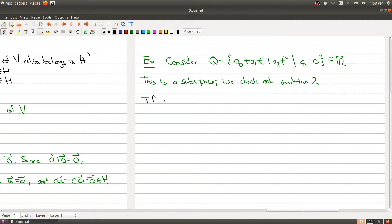So we have that if Pt and Qt are in Q, Pt has to look like zero plus A1t plus A2t squared. And similarly, Qt has to look like zero plus B1t plus B2t squared.